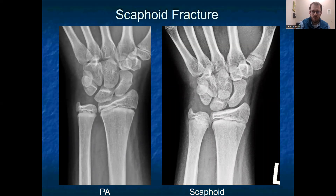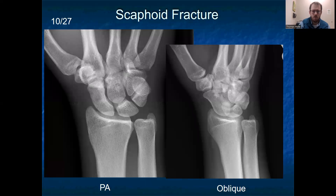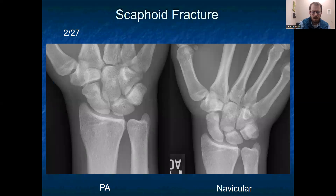Scaphoid fractures: a classic view shows lucency throughout the waist of the scaphoid on PA, seen as a navicular or scaphoid fracture. A more subtle case presented in our clinic where the initial express care x-rays — a PA and oblique with no dedicated scaphoid view — looked normal. Two weeks later, a very clear lucency within the waist of the scaphoid became visible. At four-month follow-up, improvement was seen with immobilization.